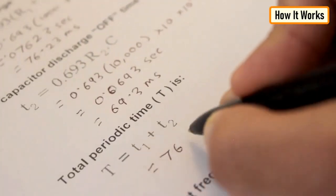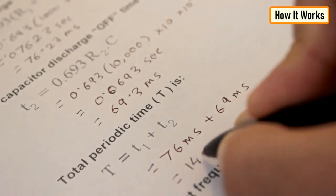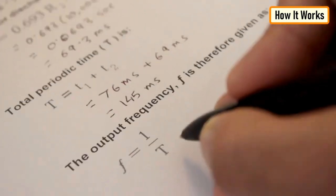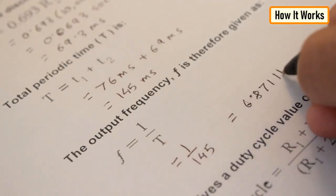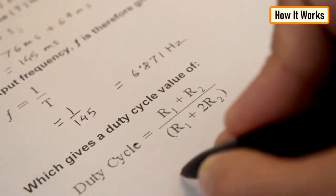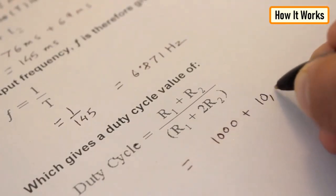Next, the total periodic time T is equal to T1 plus T2 which comes out to be 145.23 milliseconds. The output frequency F is therefore 6.871 hertz which gives a duty cycle value of 52.38 percent.